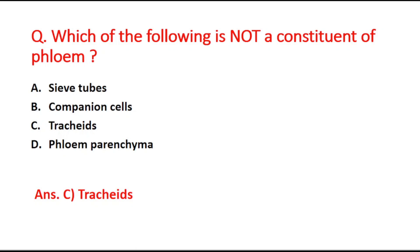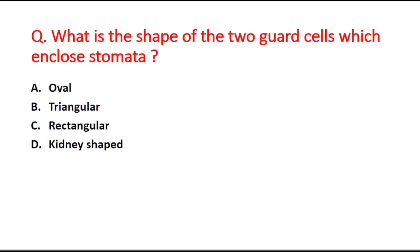Next question: what is the shape of the two guard cells which enclose stomata? Option A is oval, option B is triangular, option C is rectangular, and option D is kidney shaped. The right answer is option D, kidney shaped.